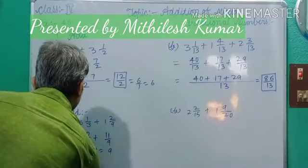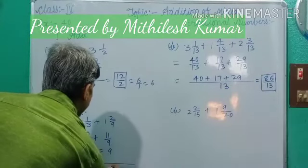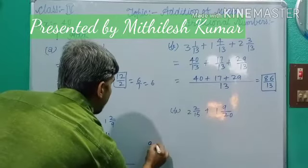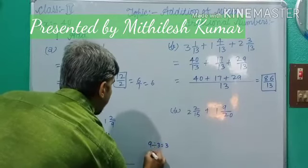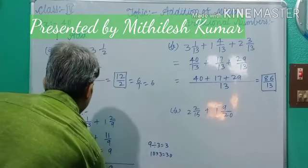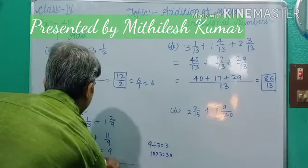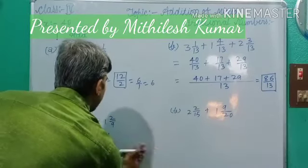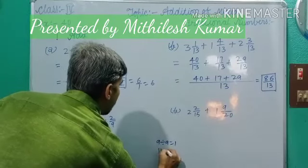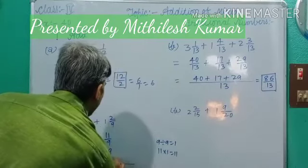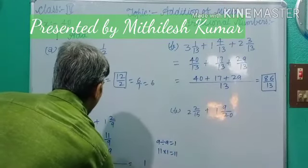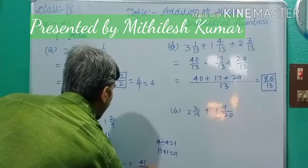Dear students, now draw a line and write down LCM 9. Here, 9 divided by 3 equals 3, and 10 multiplied by 3 equals 30. Write down 30, plus. Now same process: 9 divided by 9 equals 1, and 11 multiplied by 1 equals 11. Write here 11. Now add the numerators: 1 plus 0 is 1, and 3 plus 1 equals 4. So 41 by 9 is your final answer.